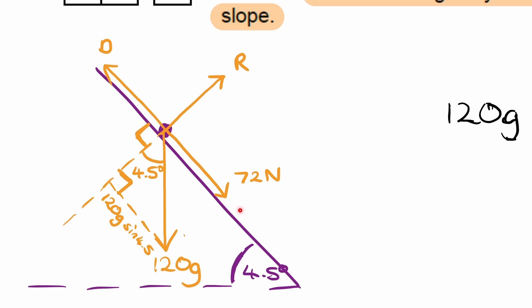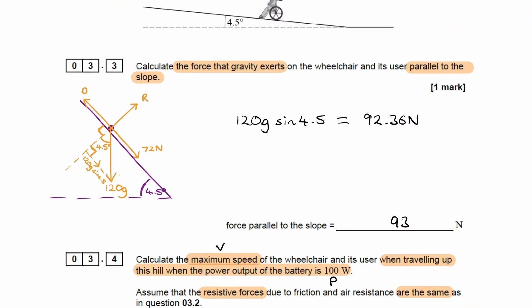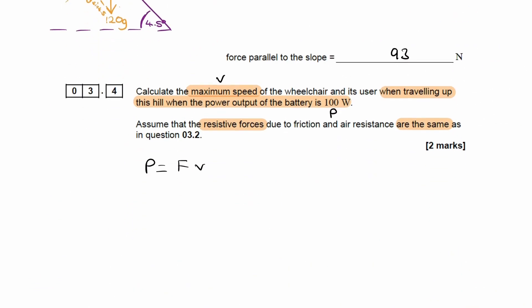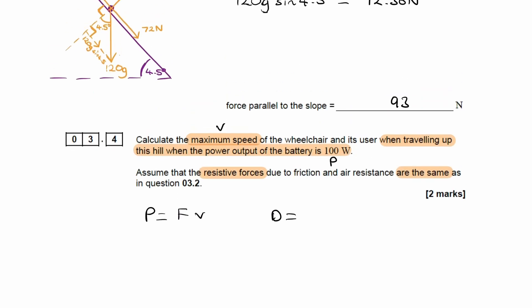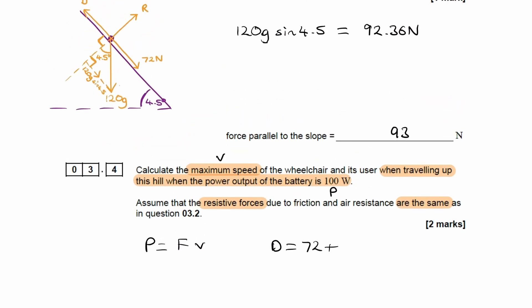We have the driving force going up the slope. We have 72 newtons going down the slope, and the component of weight we worked out earlier, 120g sine 4.5, going down the slope as well. So the driving force equals these two things. Our driving force is 72 plus 92.36. Add these up, we get 164.36.